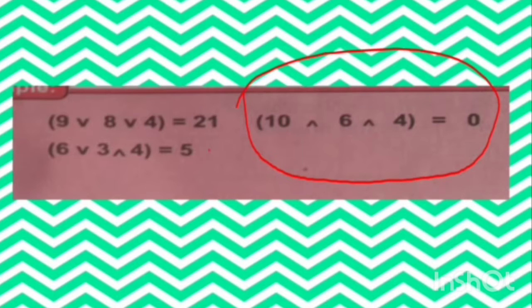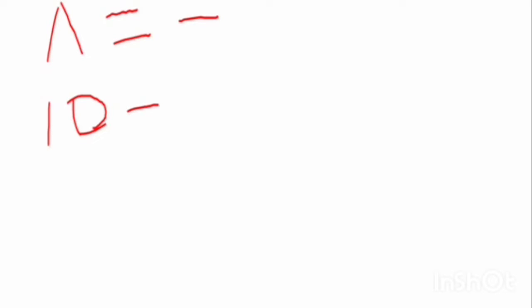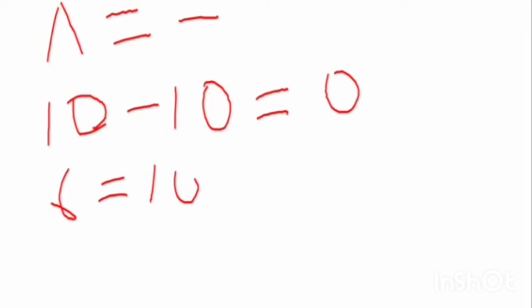If 0 is not given, then you subtract the sum of 4 and 6 from 10, and that will give you 0. If you are looking for 6, then you subtract 4 from 10, to get 6.